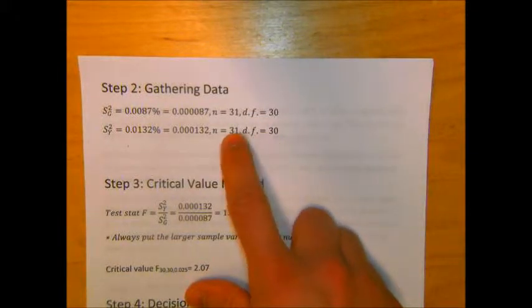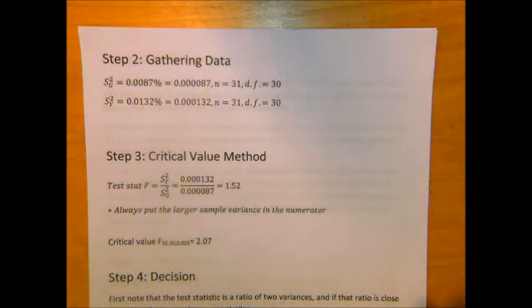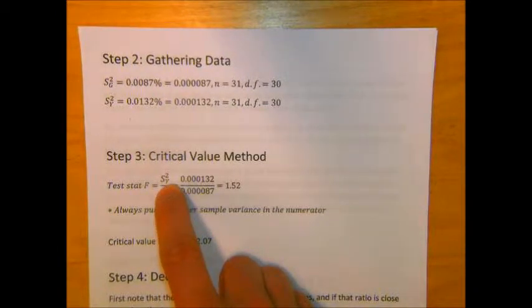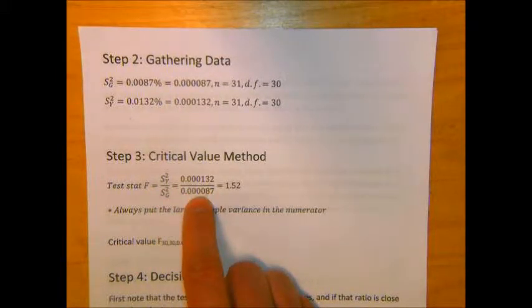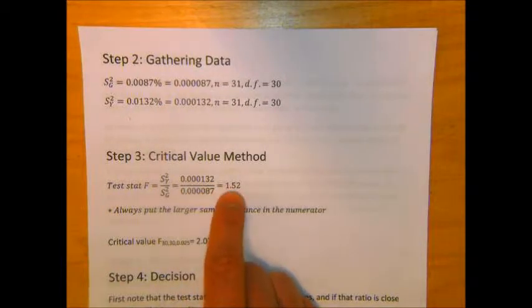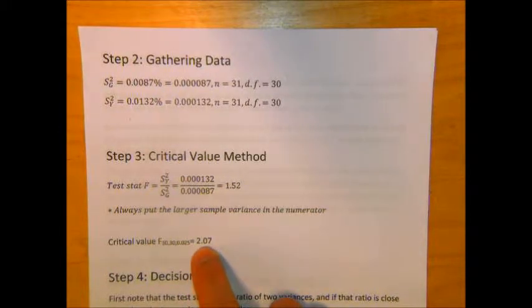In the critical value approach, the test statistic is one of the easiest test statistics we'll ever calculate. We take the larger of the two sample variances, which was Yahoo's in this case, and divide by the smaller. Always put the larger one in the numerator so that you can use the F tables in your textbook. In this case, our test statistic is 1.52. The critical value here will be 2.07 at the 5% level of significance.